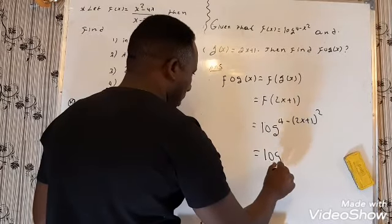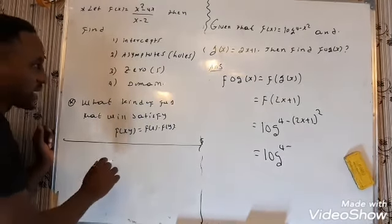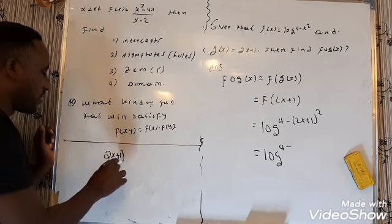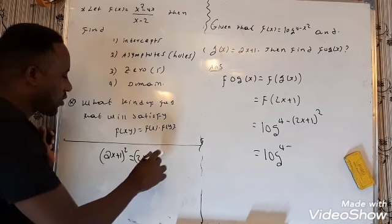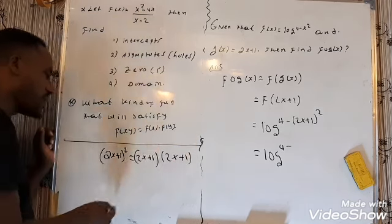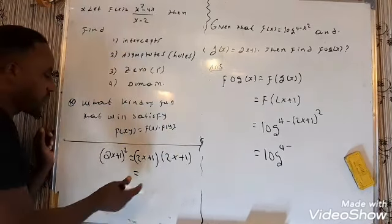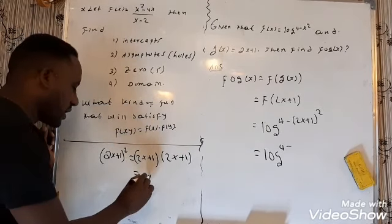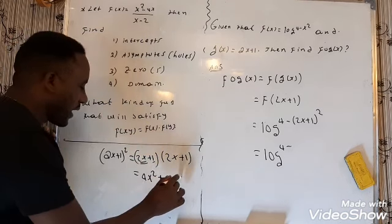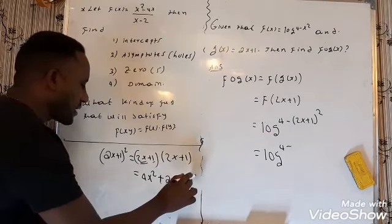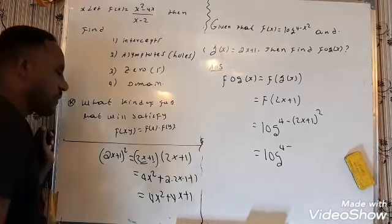This is exactly the logarithm of four minus... Now let me explain what (2x+1) whole squared means in general. This means that you have to multiply (2x+1) with (2x+1) since they have the same value. These two terms are the same. Using the perfect square expansion — square of the first plus twice the product plus the square of the last — that is 4x² plus 4x plus 1.